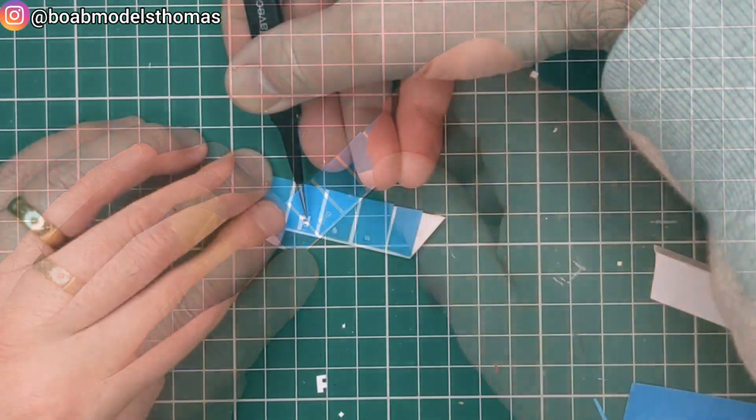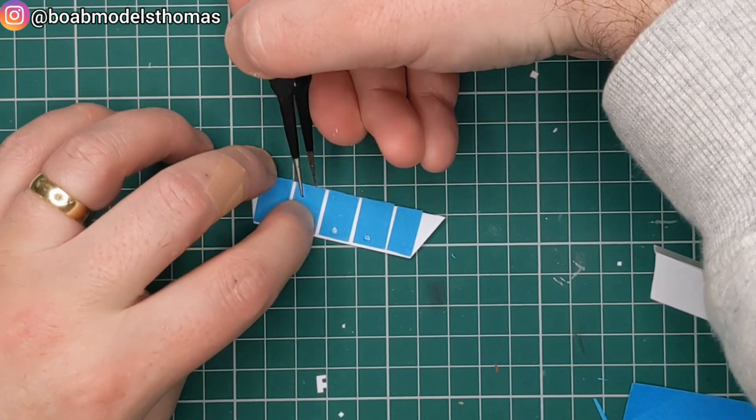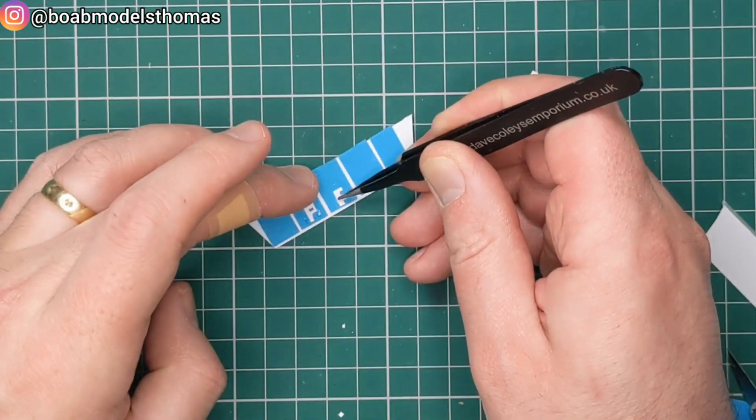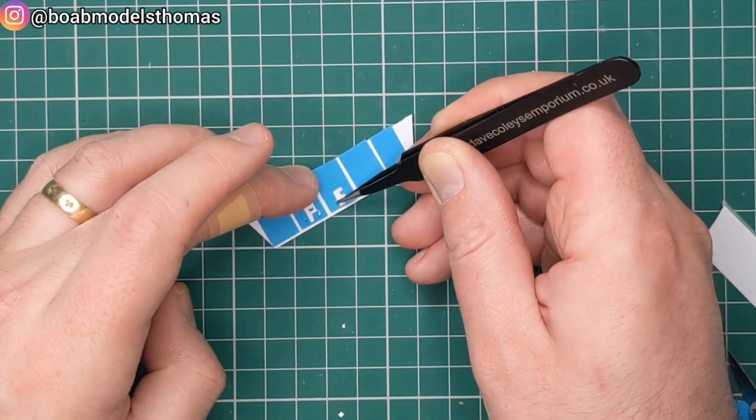Now, for a couple of the stands, they've got some lettering, so I cut these out of paper using the craft knife, PFC for Portsmouth Football Club.